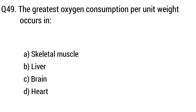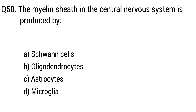Question 49. The greatest oxygen consumption per unit weight occurs in — the right answer is Option D: Heart. Question 50. The myelin sheath in the central nervous system is produced by — the right answer is Option B: Oligodendrocytes.